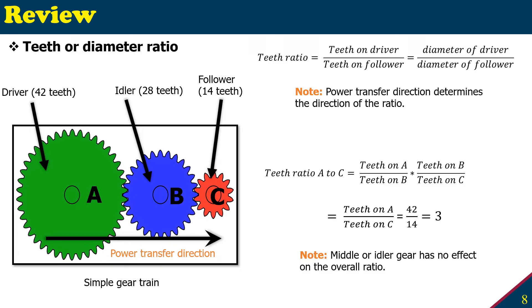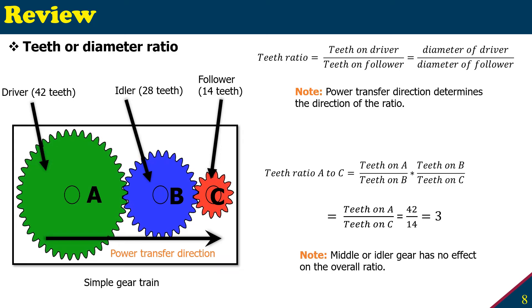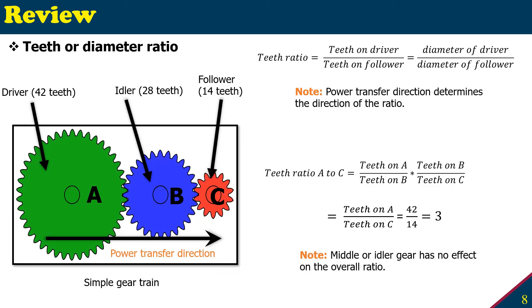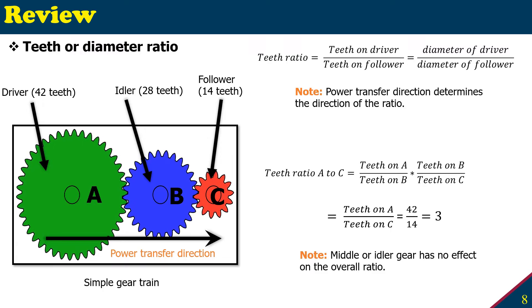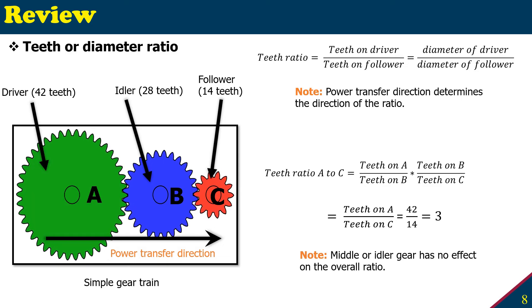Did you notice that the middle or idle gear, the blue one, has no effect on the overall ratio? For example, if we didn't consider this multiplication, we just take the first one and the last one, take the ratio, it would have got the same result, 3. This is only valid for simple gear train where the middle gears are idle gears, and the idler gears have no effect on the overall teeth ratio.